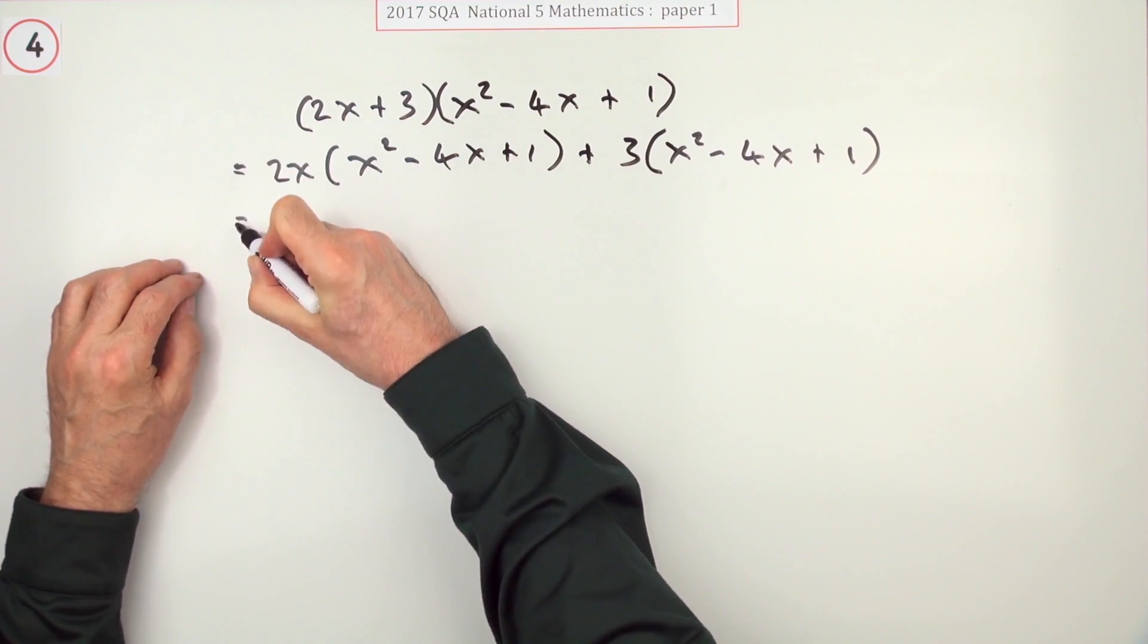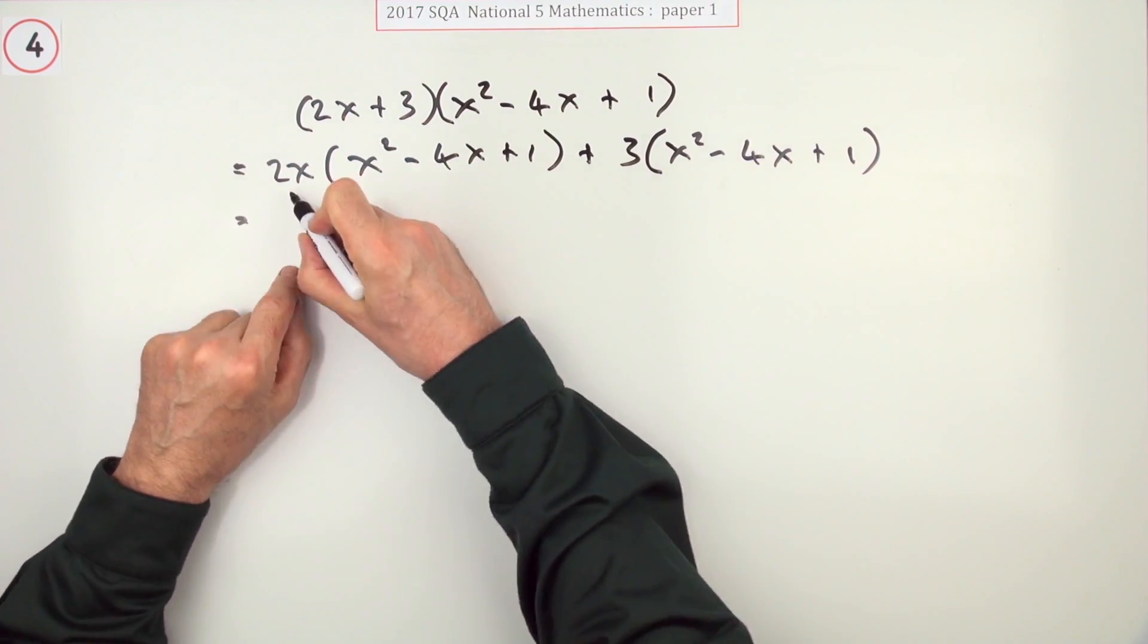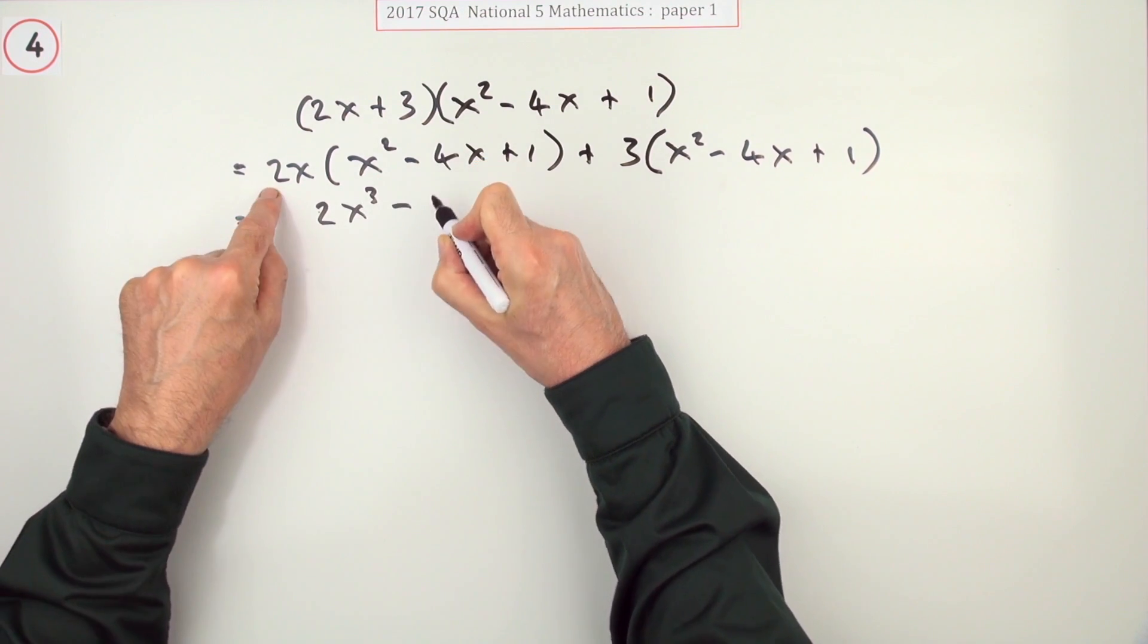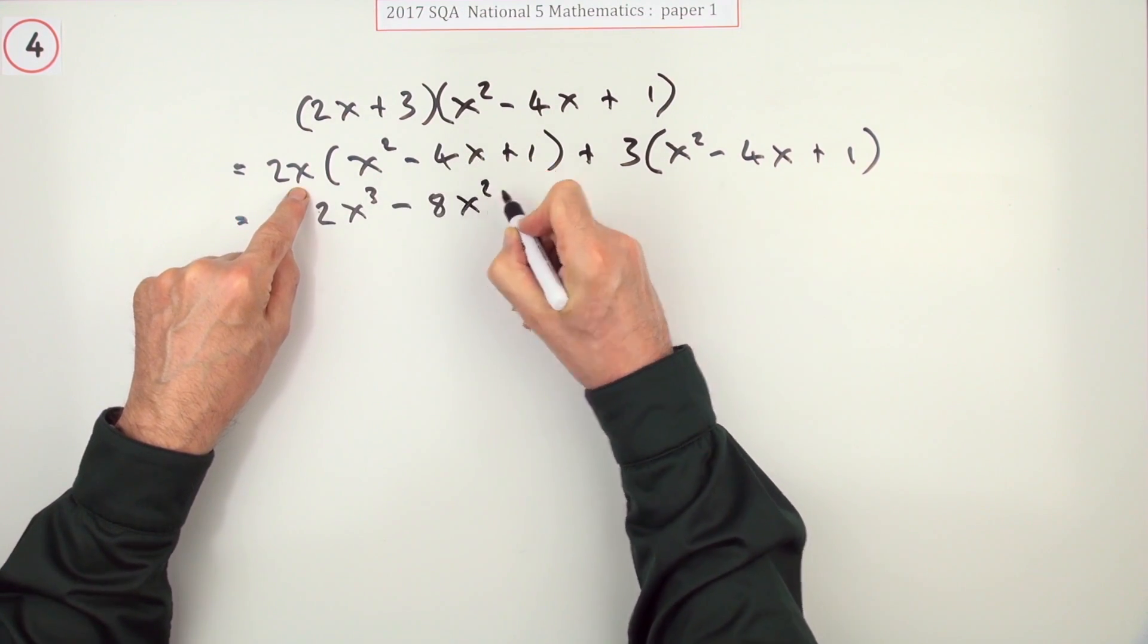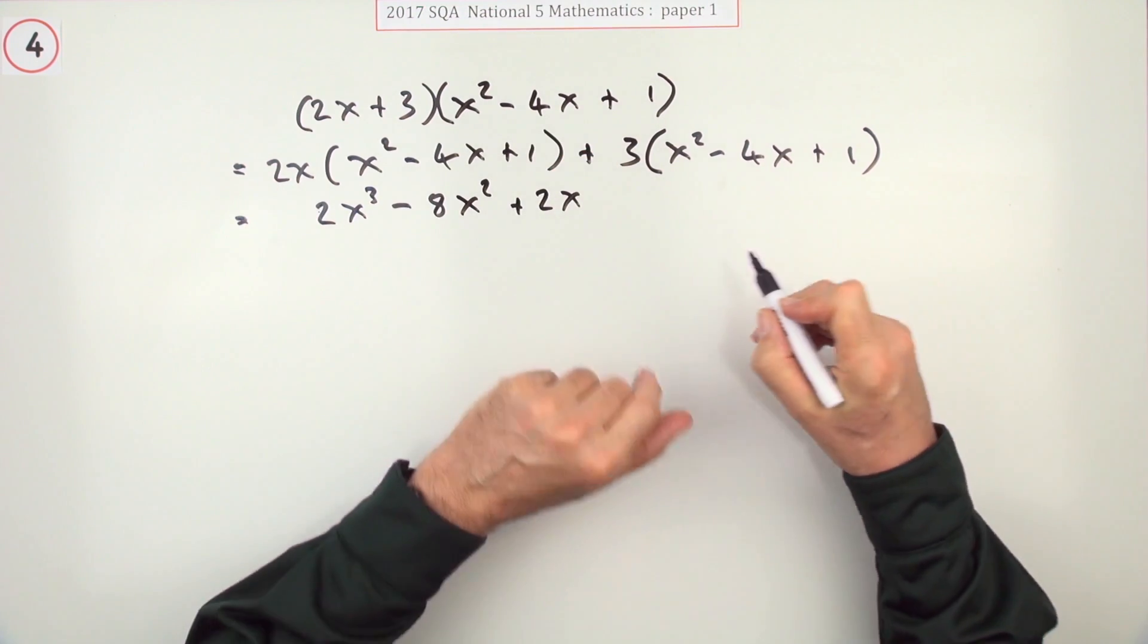Now you're going to have six products to do, but they're not very difficult. You've got 2x³ minus 8x² plus 2x, so that's that one done.